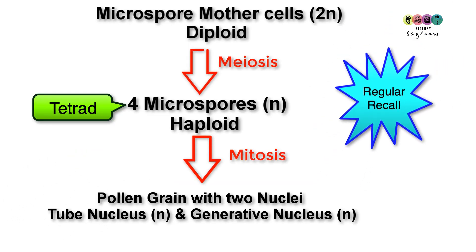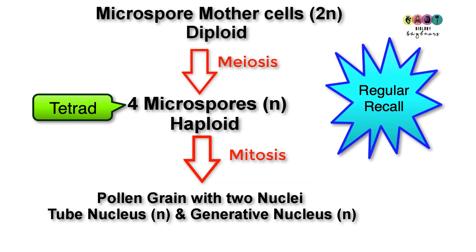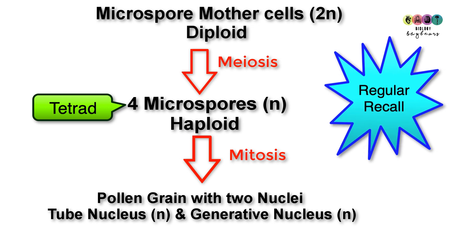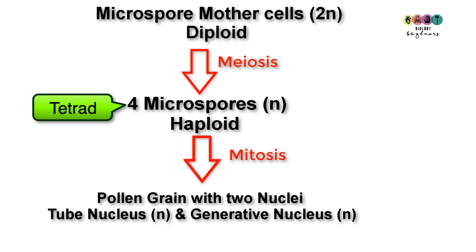The key to good revision is regular recall. You have to keep going over material to ensure you remember it and it's embedded in your long-term memory. A good way to do that is to draw flow diagrams like this.